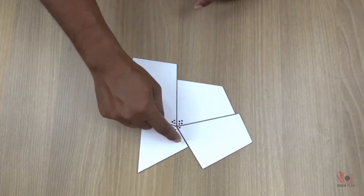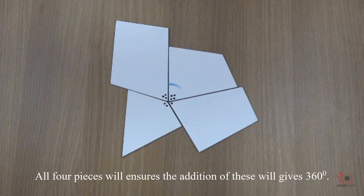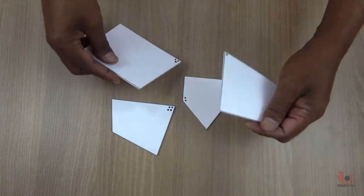Here you can see the addition of all four internal angles in the quadrilateral is 360 degrees. You can rearrange the pieces of the quadrilateral and show the addition of the internal angles is always 360 degrees.